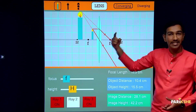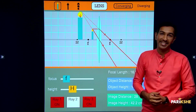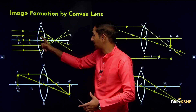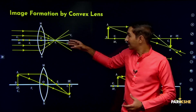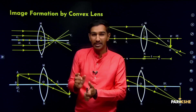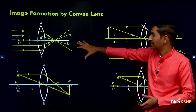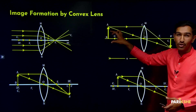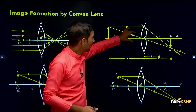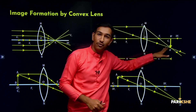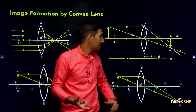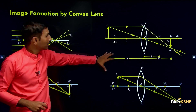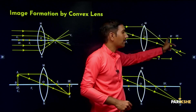Let's look at the summary through slides. For a concave lens, first case: object at infinity — image forms at F2, and the image is highly diminished and inverted. Case 2: object between 2F1 and infinity — the image forms between F2 and 2F2, nature of the image is inverted and real, size is diminished, and position is between F2 and 2F2.